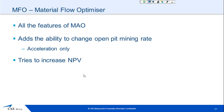With Material Flow Optimiser, it has all the features of MAO, but it also adds the ability to change the open pit mining rate. Your schedule sequence will remain the same, but you are able to mine faster to get more material in. What it's doing is trying to increase the value of the mine by bringing higher-grade ore forward and stockpiling or dumping low-grade ore for processing later.